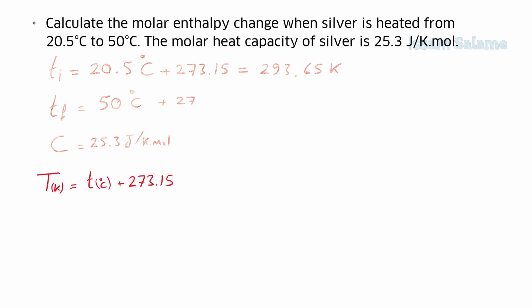We also add 273.15 to the final temperature, giving 323.15 Kelvin. Now, someone might point out that even without converting to Kelvin the temperature difference is the same — that's true, but it's better to practice using Kelvin since most temperature-related chemistry questions require the temperature to be in Kelvin. Now we write the formula: ΔH = c × ΔT.